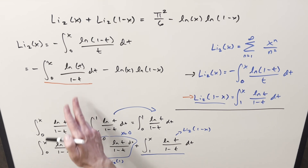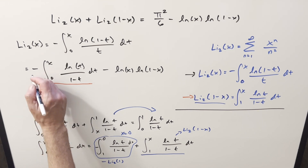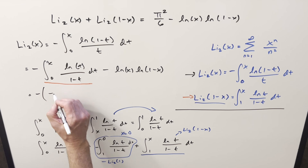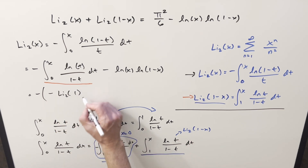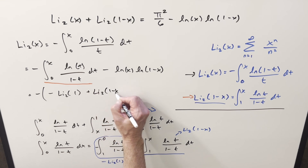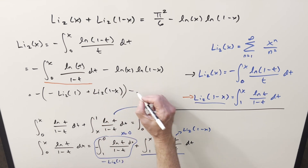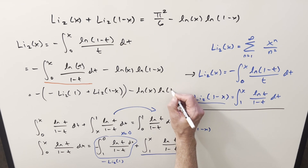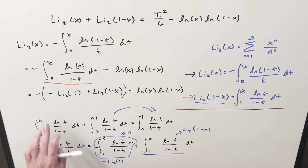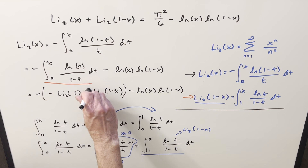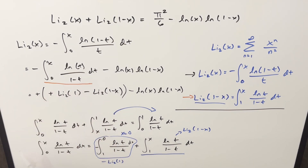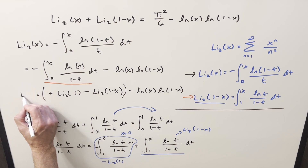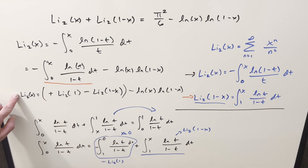We take this and plug it back in. With the minus sign in front, this gives minus Li₂(1) plus Li₂(1 − x). Then bringing down the other stuff: minus ln(x) · ln(1 − x). Distributing the minus sign back in — minus in front of the first term and minus times minus is plus — and all of this is just our Li₂(x) value. So now we can rearrange and simplify.